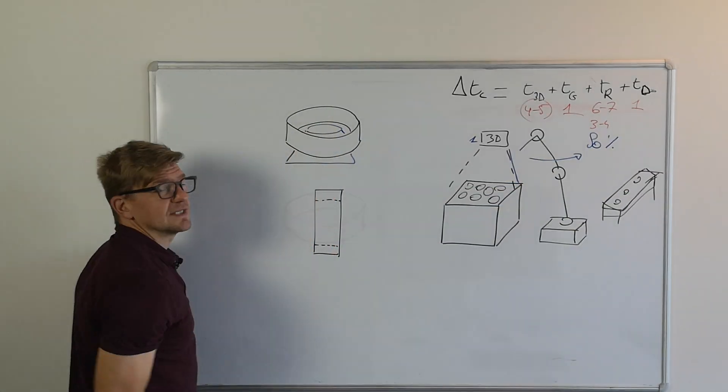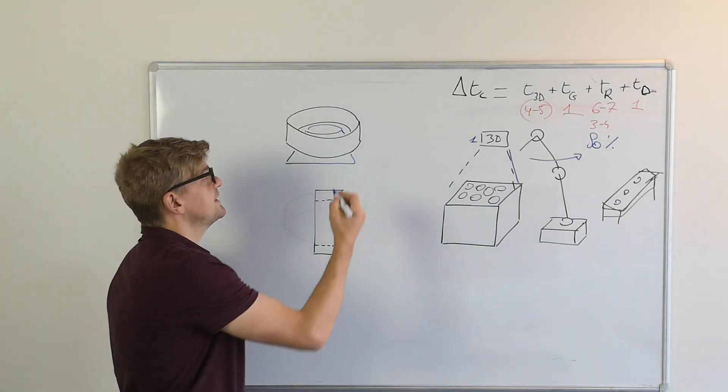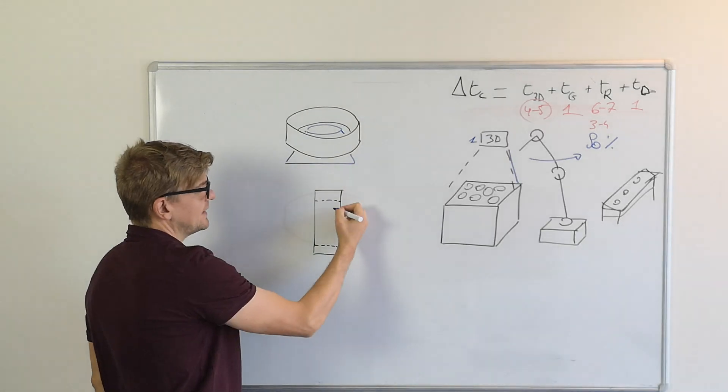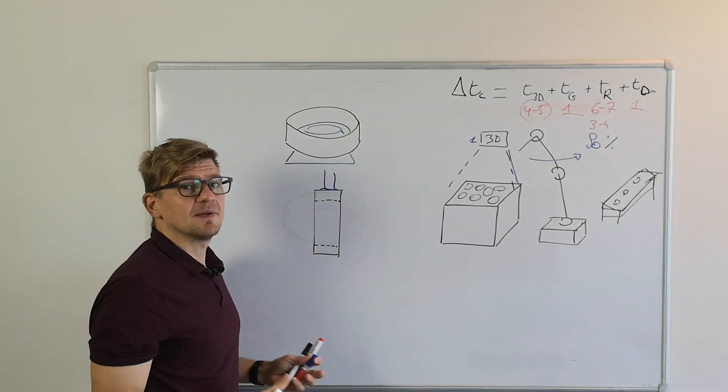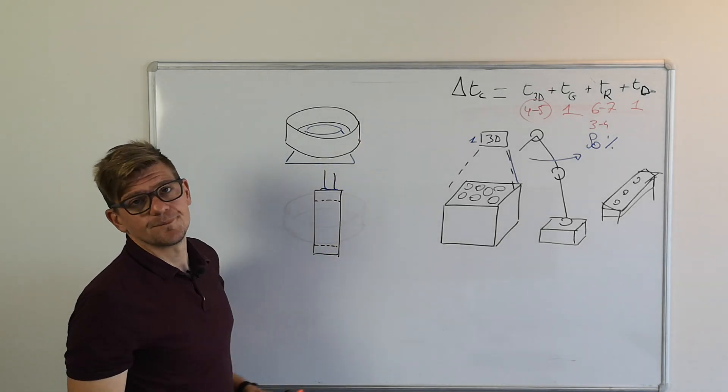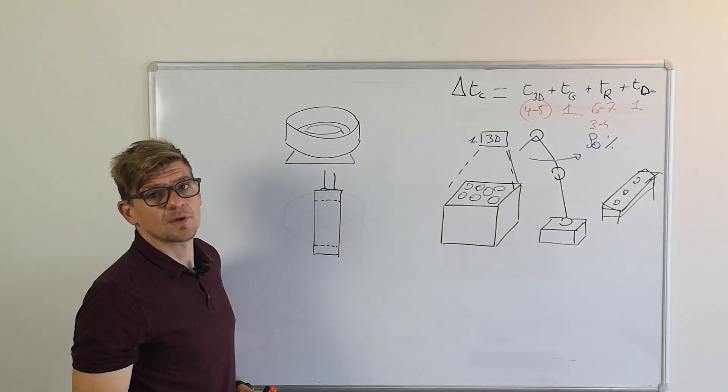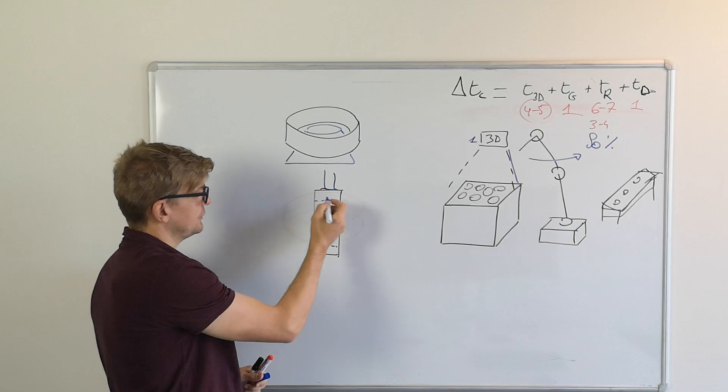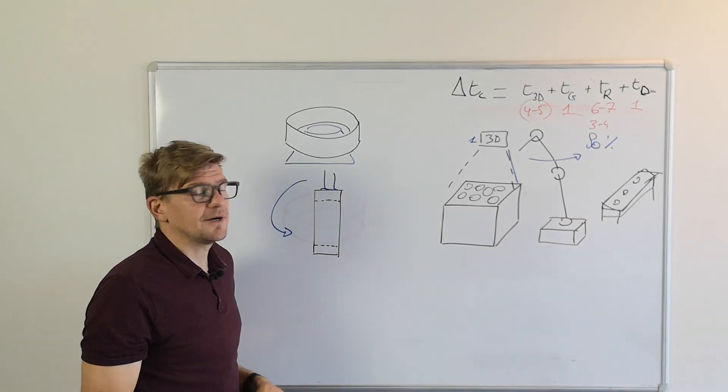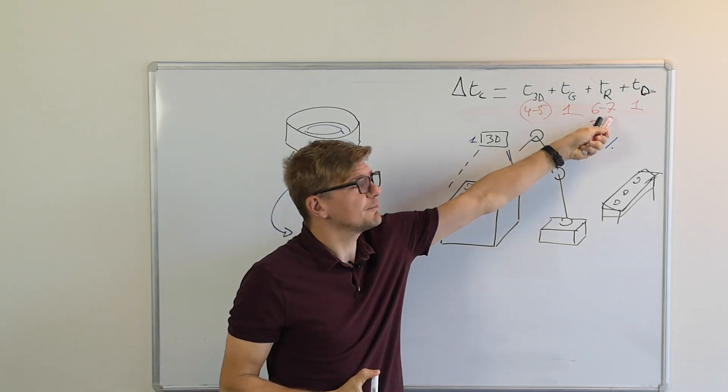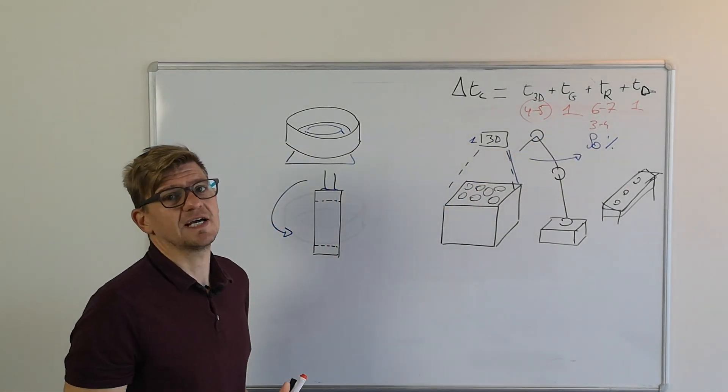For example, for these rings, if you can pick these rings with a magnet when they're standing up, you can just go straight down, pick them, but then how will you drop them onto the fixture? You need a very strong magnet to turn them 90 degrees and then drop them on the fixture. So think about it because the grasping and the robot motion time are very important for your cycle time.